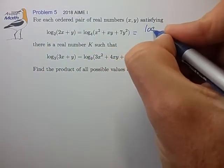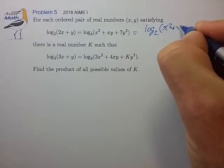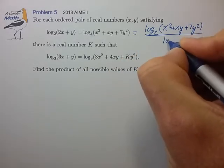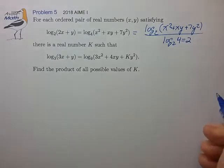So we can write this as log to the base 2 divided by log to the base 2 of 4, which we know is equal to 2.